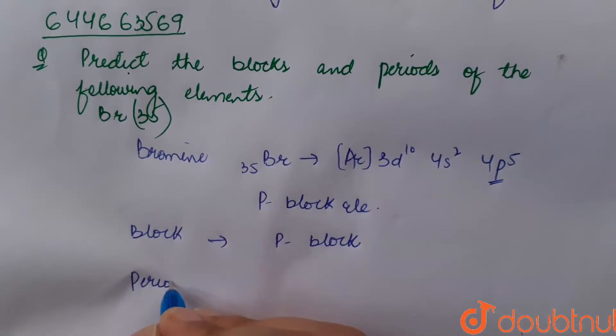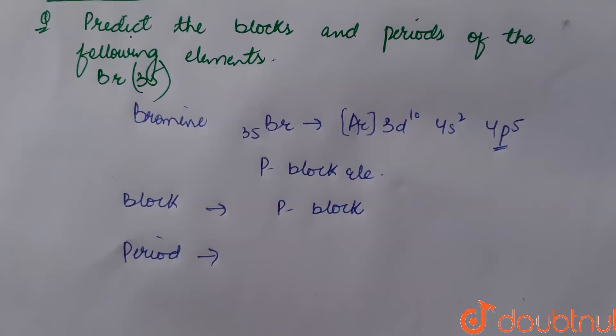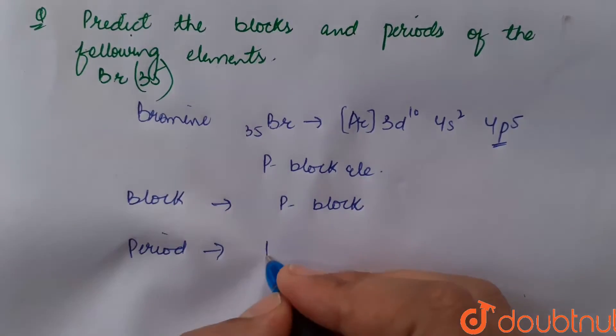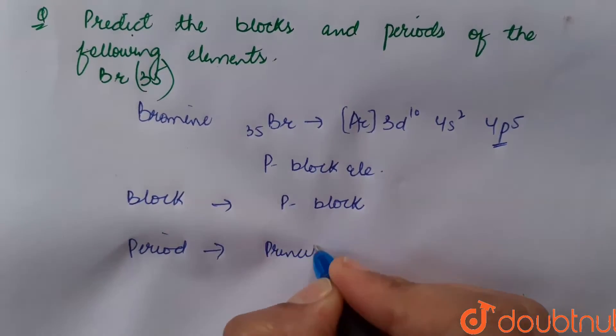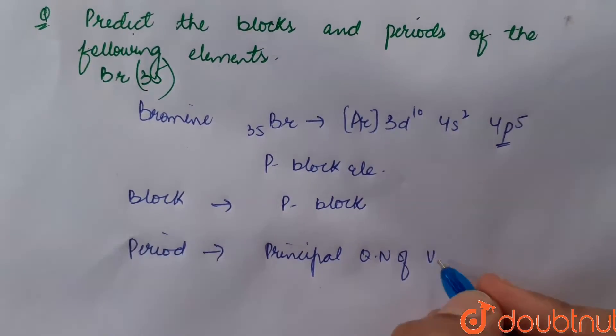Now the period to which it belongs. The period which an element belongs equal to principal quantum number of balance electron. So period equals to principal quantum number of balance electron.